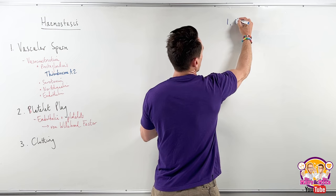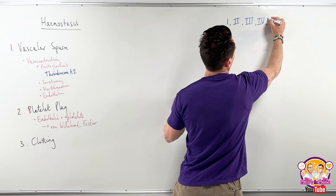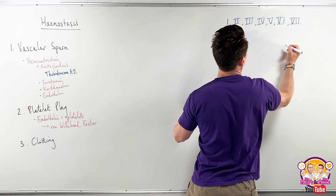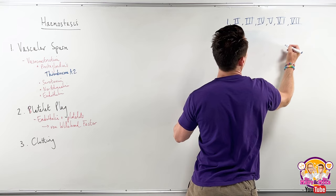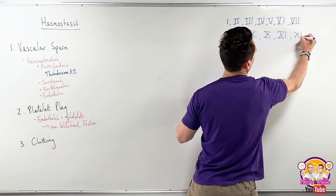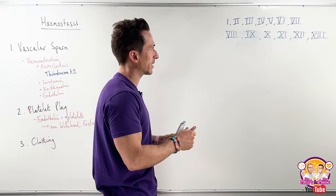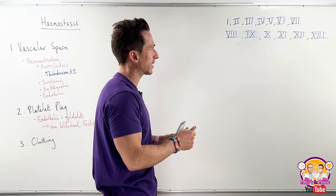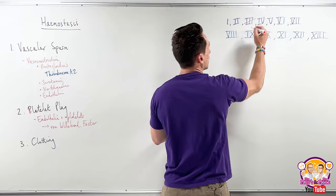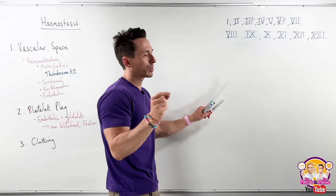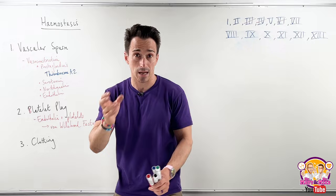The clotting cascade has various factors, and because it's biology we love to make things difficult — instead of numbering them 1 to 13, we use Roman numerals, a way of counting that hasn't been used for 2000 years. The factors are 1, 2, 3, 4, 5, 6, 7, 8, 9, 10, 11, 12, and 13. However, there's basically no such thing as factor 3, factor 4, or factor 6 — though some textbooks do refer to them.